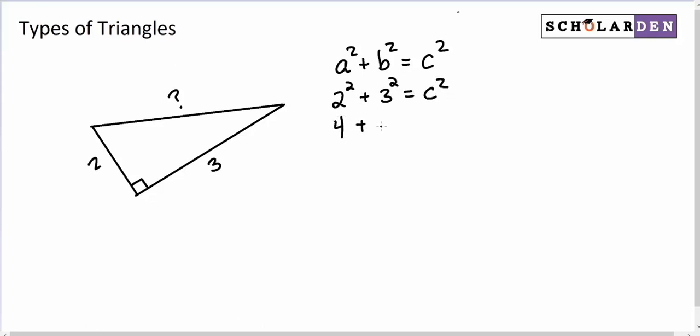2 squared is 4, 3 squared is 9, and we get C squared equals 13. And if I just switch that around, I'll just write it this way, and then square root both sides, and I'm going to leave that just as the square root of 13. So we just discovered that this is the square root of 13.